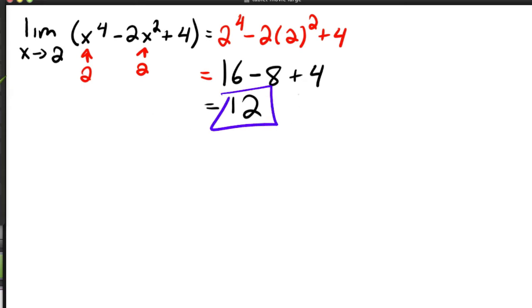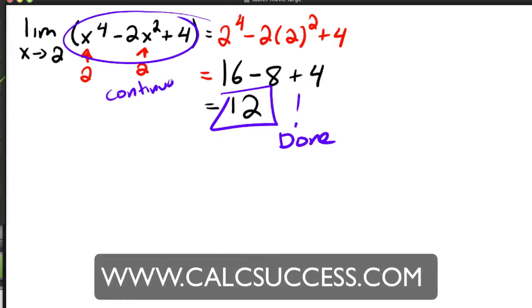And that's it, you're done. Because essentially what happened is this guy is a continuous function. And when you plug it in, that means that's it, you're done. So the value of the function at two is equal to the limit.